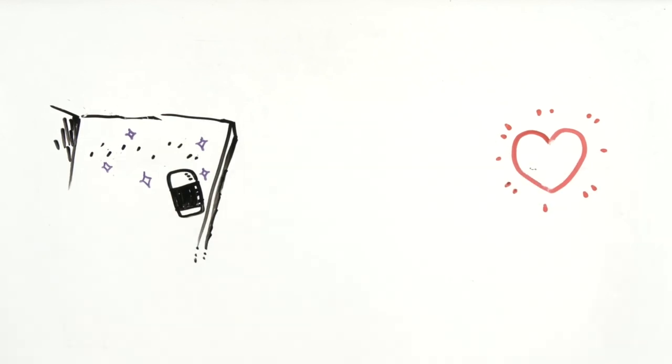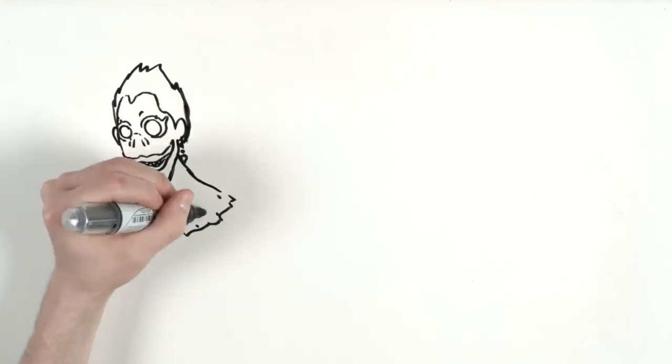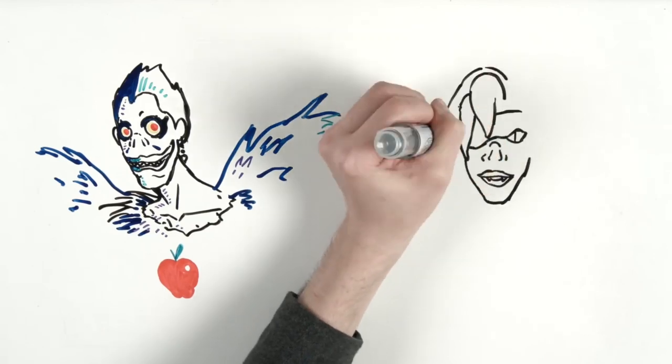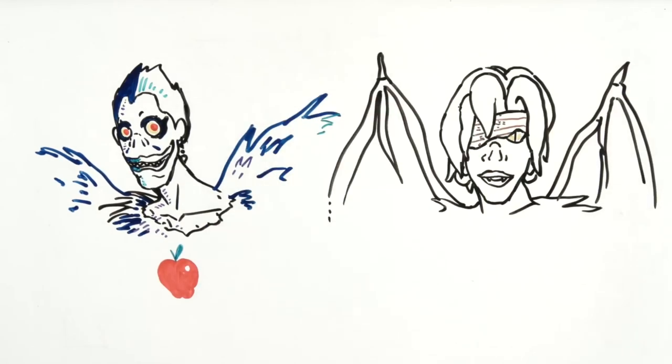Shinigamis are the gods of death who survive by killing humans to extend their own lives. They live in a parallel universe. They are immortal and only people who have been in contact with the Death Note can see them.